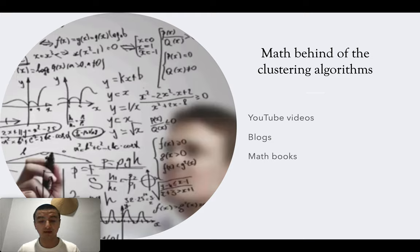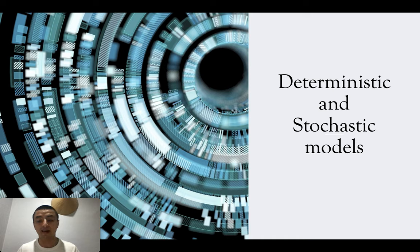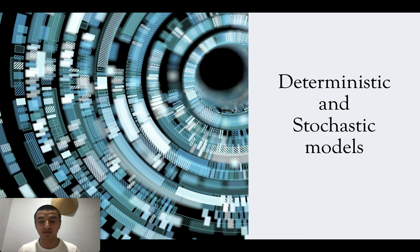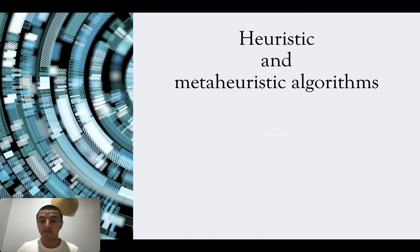Reading about these algorithms on websites, watching YouTube videos, reading blogs and books, I found a term that repeats a lot: deterministic and stochastic models. That got me curious. Reading about those two terms, I found a couple of books that mentioned a new term — meta-heuristic algorithms, heuristic and meta-heuristic algorithms.